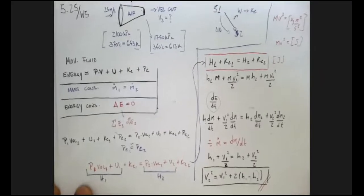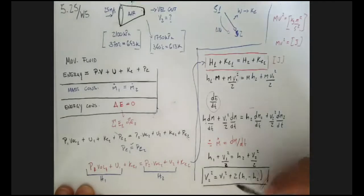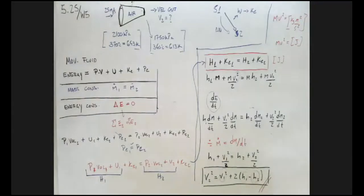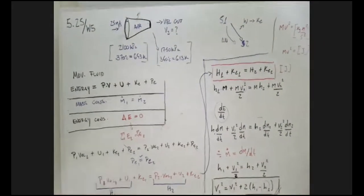After all that work, we're left with: v2 = √(v1² + 2(h1 − h2)). We already know v1. We just need to find h1 and h2. We have two options: use cp, or use a table. I'll solve it using the table and then show how to use cp as an alternative.